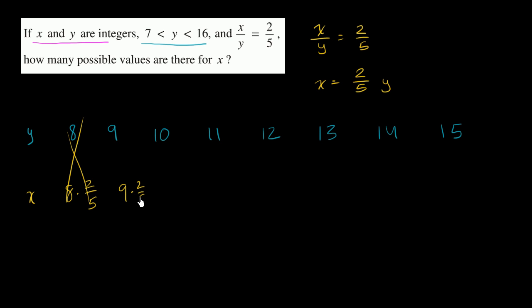Is 9 times 2 fifths going to be an integer? No. 9 isn't divisible by 5. I think you start to see a pattern here. 10 times 2 fifths, is that going to be an integer? Sure. 10 is divisible by 5. 10 divided by 5 is 2 times 2. This is equal to 4. So this is a possible value for x.